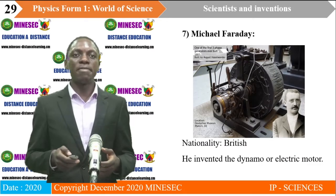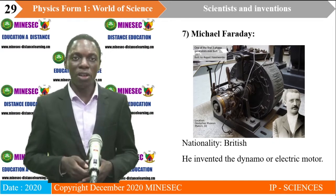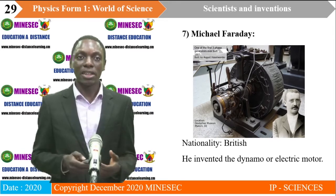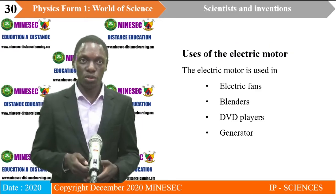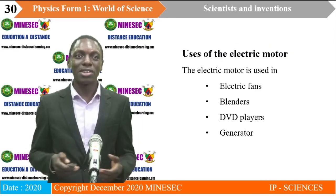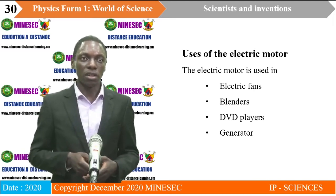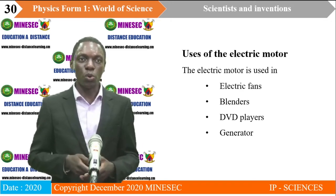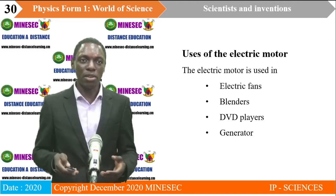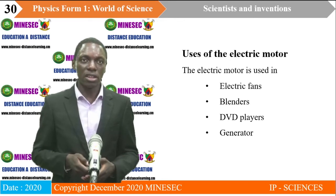Michael Faraday was a British inventor who invented the dynamo or electric motor. There are several appliances at home that contain dynamos or electric motors — for example, electric fans, blenders used for grinding spices, DVD players for entertainment, and generators that help in generating electricity.